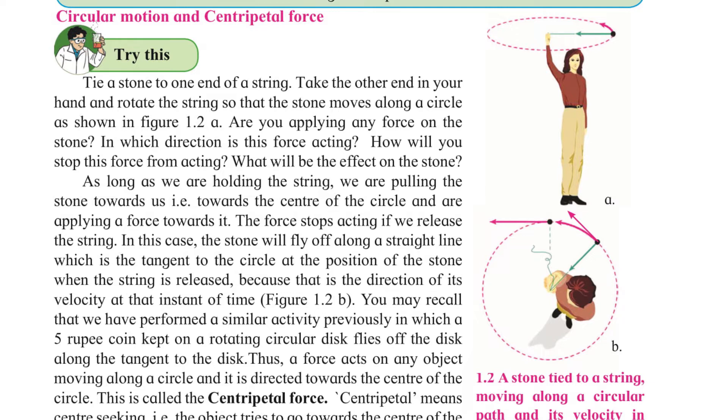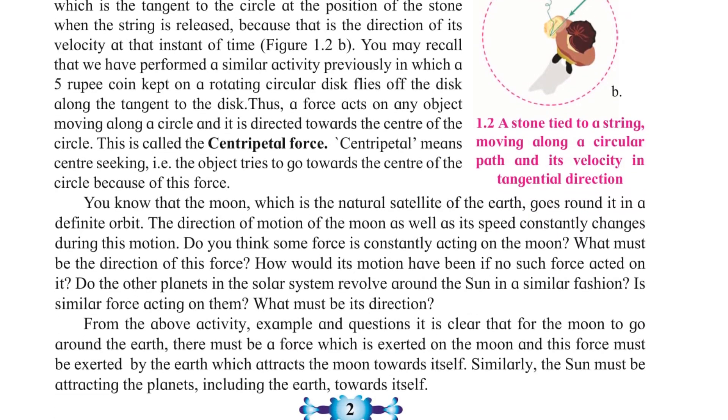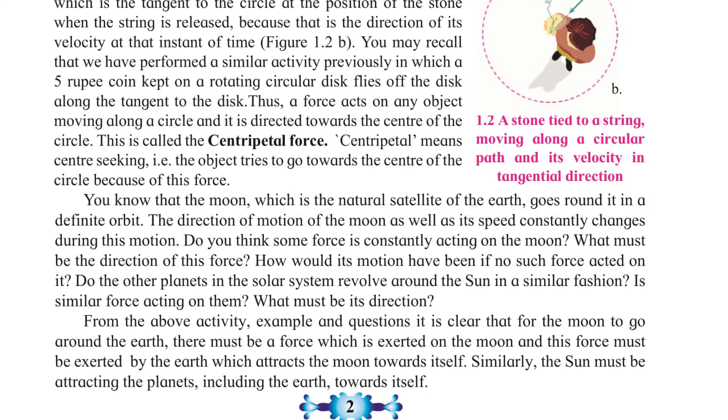Just have a look at figure 1.2B. You may recall that we have performed a similar activity previously in which a 5 rupee coin kept on a rotating circular disk flies off the disk along the tangent to the disk. Thus, a force acts on any object moving along a circle and it is directed towards the center of the circle. This is called the centripetal force.